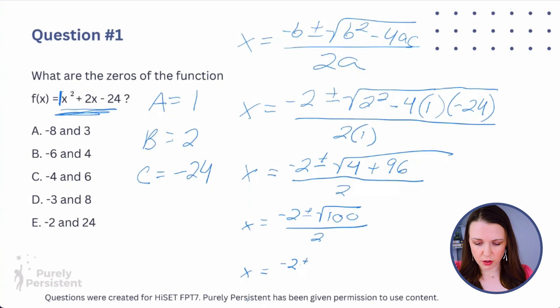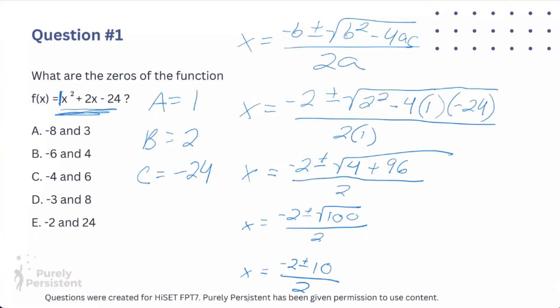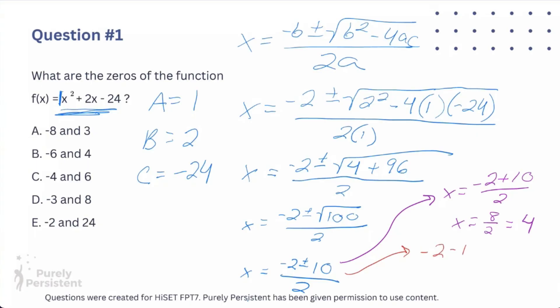Now I break it into two pieces. First (in purple): x = (-2 + 10) / 2 = 8/2 = 4. Then (in red): x = (-2 - 10) / 2 = -12/2 = -6. So my answer is B — x = 4 and x = -6 — the same answer I got before with factoring. This method requires a little more work, but both techniques get you there.